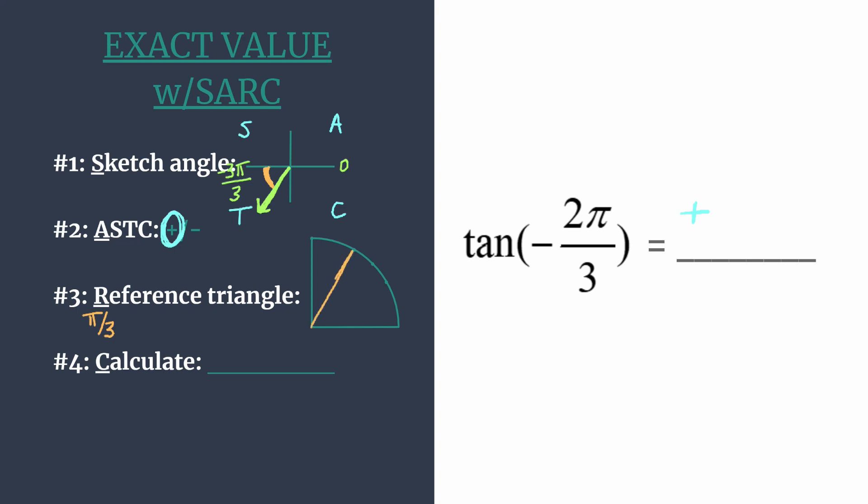We normally talk about our special right triangles in terms of degrees, so we're working with this triangle here that has a central angle of 60 degrees. It's a 60-30-90 special right triangle.